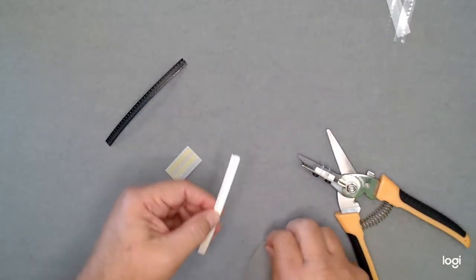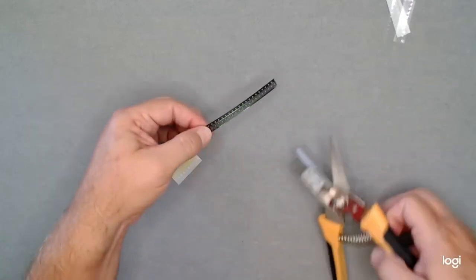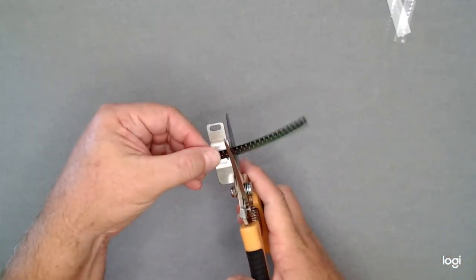Then when you go to the embossed pocketed tape, it's the same thing. We want to cut it with the 4mm pitch. This will cut right between the pockets.